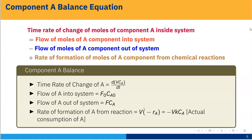We have to do the component A balance. For the component A balance, the equation states: the time rate of change of moles of component A inside the system equals the flow of moles of A into the system, minus the flow of moles of A out of the system, plus the rate of formation of moles of A from the chemical reaction. Since the reaction is A to B and A is consumed, the rate of formation of A carries a negative sign, meaning consumption.